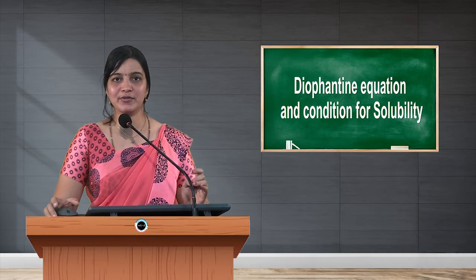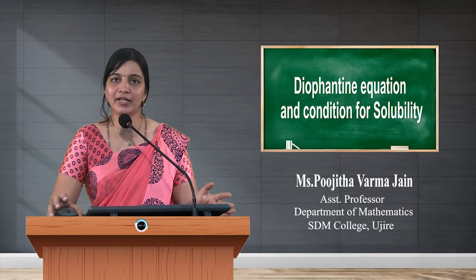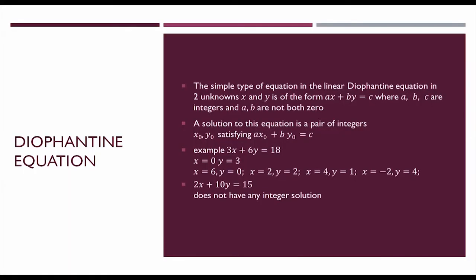Hello students. In today's class we will discuss the Diophantine Equation. The simple type of equation of the form ax plus by equal to c, where x and y are integers, a, b, c are integers and a and b are both not equal to 0, is known as a linear Diophantine Equation. A solution of this equation — if x naught and y naught are a solution, then ax naught plus by naught is equal to c.